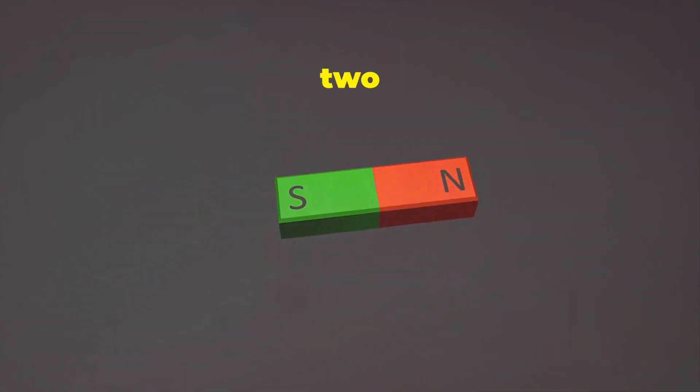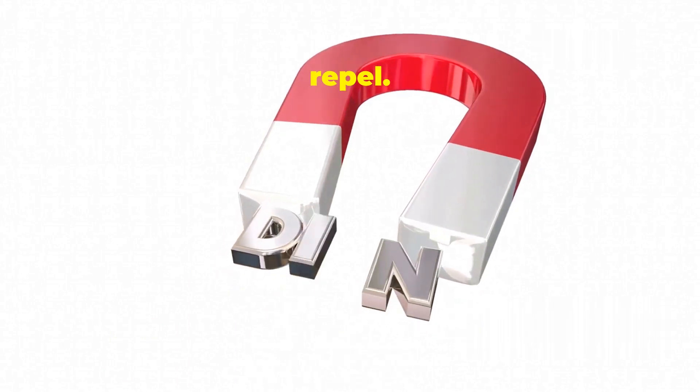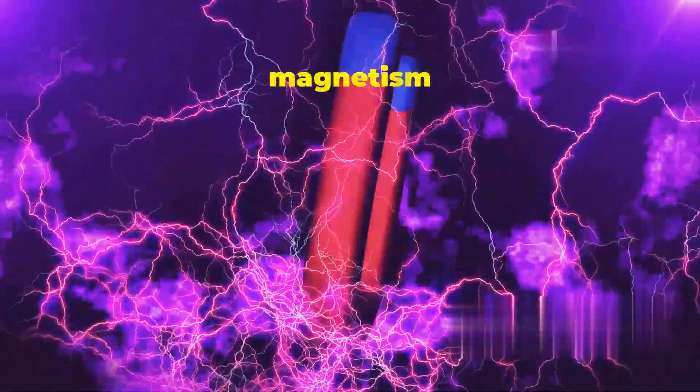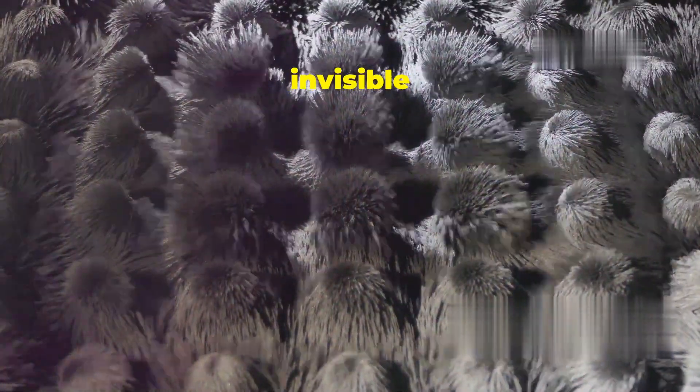Every magnet has two poles, a north pole and a south pole. Opposite poles attract each other, while like poles repel. You can see this in action when you bring two magnets close together. But here's the thing: Magnetism isn't just about static attraction or repulsion. It's all about invisible force fields.